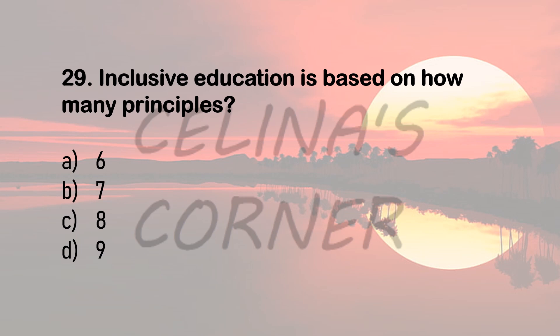Question 29. Inclusive education is based on how many principles — 6, 7, 8, or 9? The correct answer is option B, 7.